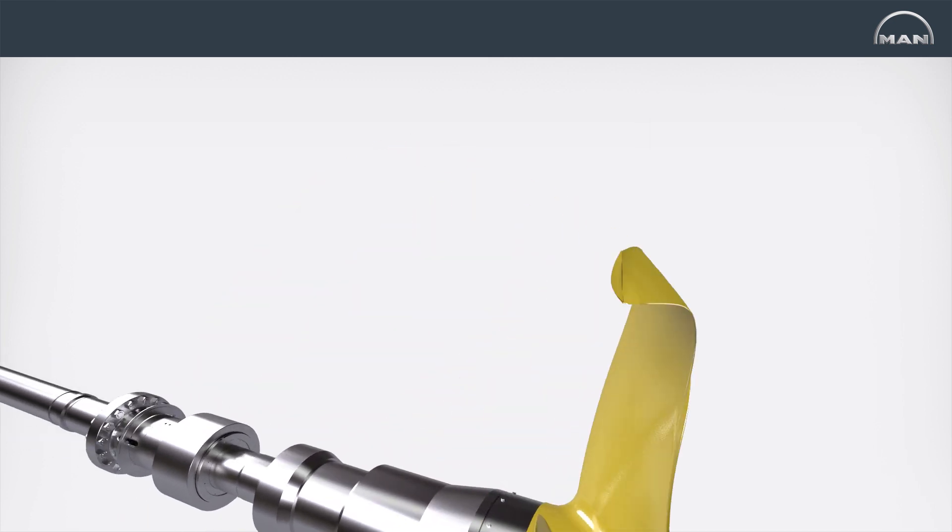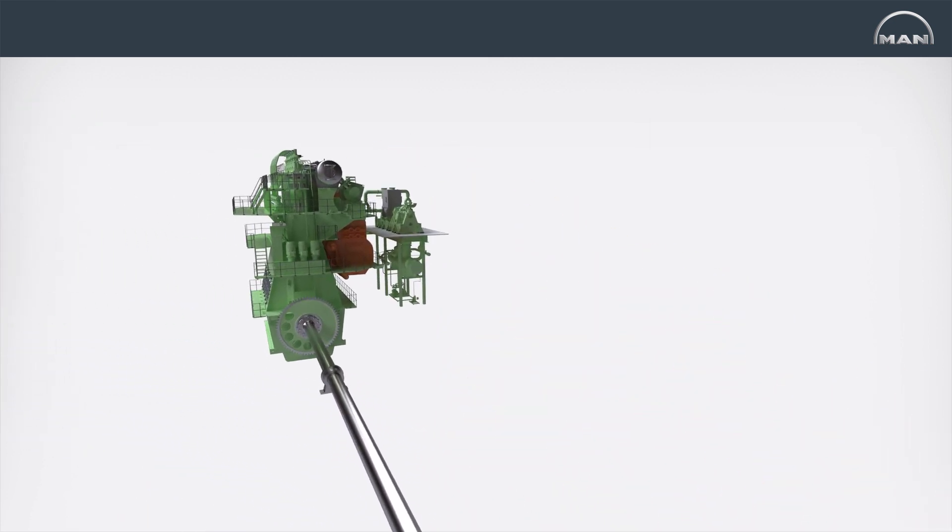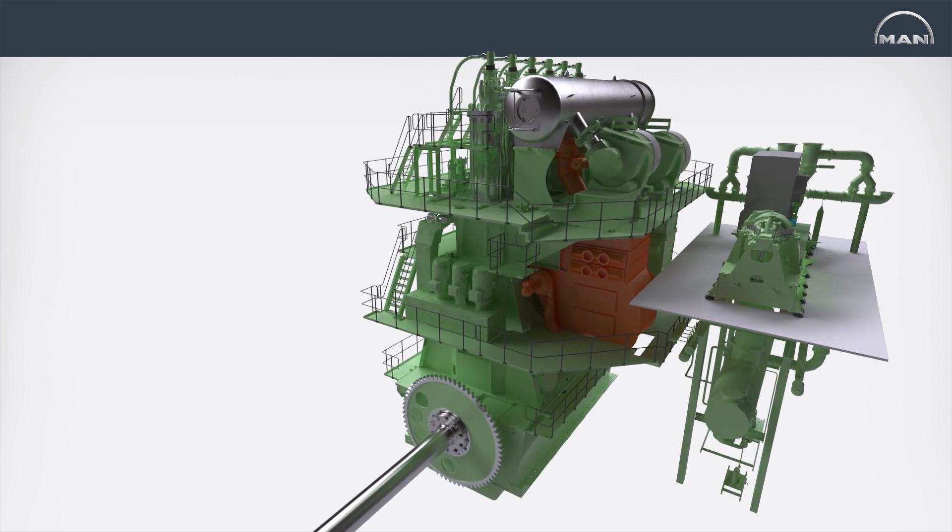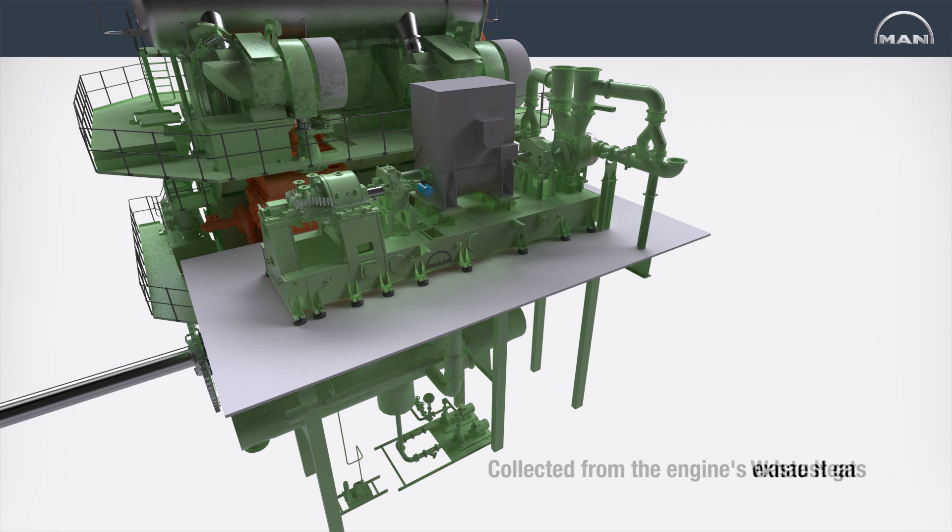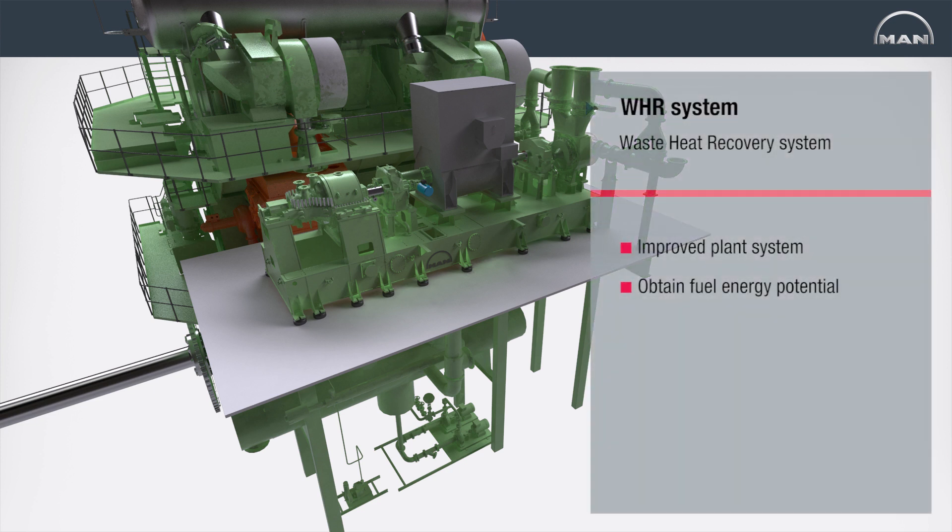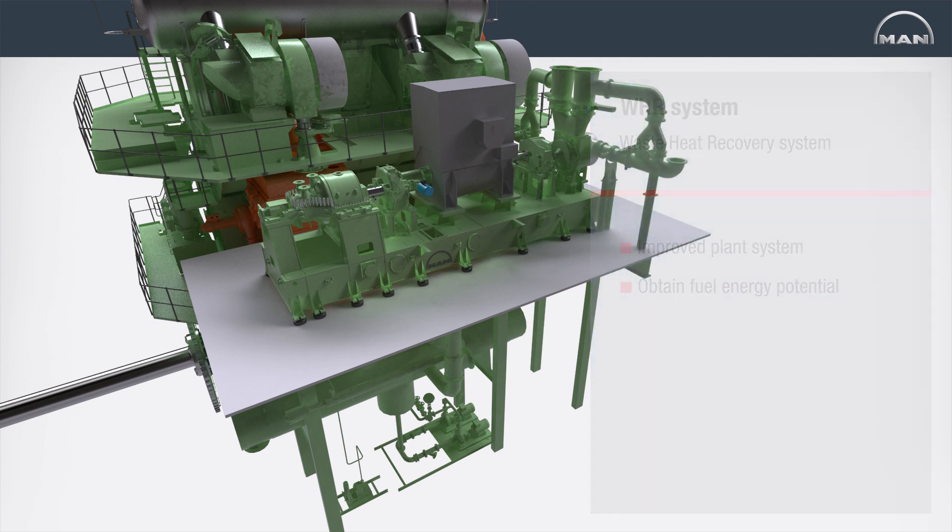The most efficient way to increase the total efficiency of a ship with a two-stroke engine is to utilize the engine's waste heat. This waste heat is primarily collected from the engine's exhaust gas. The MAN Diesel and Turbo developed waste heat recovery, or WHR system, utilizes the exhaust gas temperature to heat up steam, which in turn drives an ultra-efficient steam turbine.